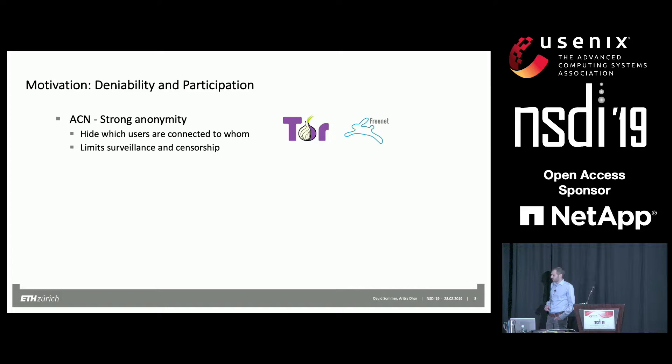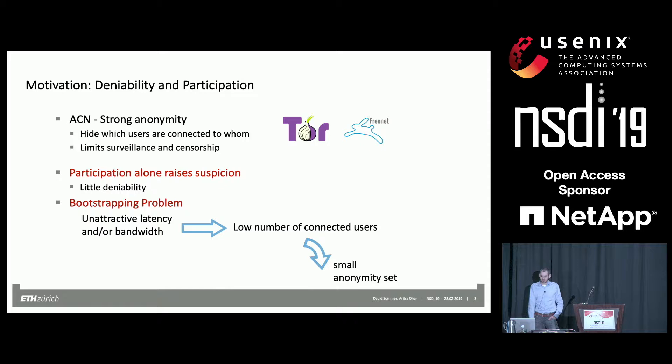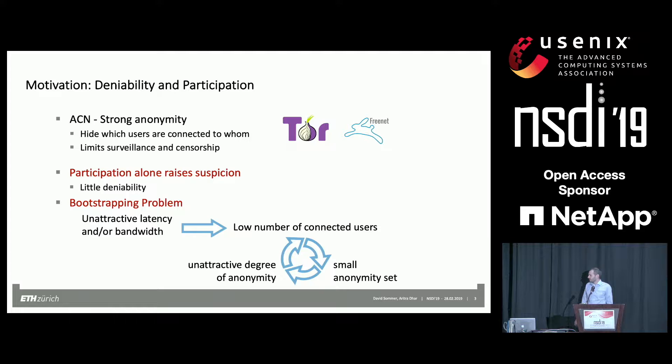There are two fundamental problems with ACNs. First, when you connect to them, your ISP or a government agency can see from the network traffic that you're actually connecting. This is already suspicious and gives you little deniability. Second is the bootstrapping problem. If an ACN has unattractive latency, there are a low number of connected users, which means small anonymity sets, leading to an unattractive degree of anonymity again, so new users will not be motivated to join.